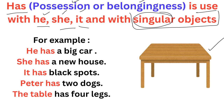For example: 'He has a car.' Why have we written 'has' here? Because 'he' is there — he ke saath has use hota hai. He has a car — uske paas ek car hai. Next: 'She has a new house.' Has is used here because 'she' is there. She has a new house — uske paas ek naya ghar hai. Here we also have belongingness — whose house is it? Uska house hai.